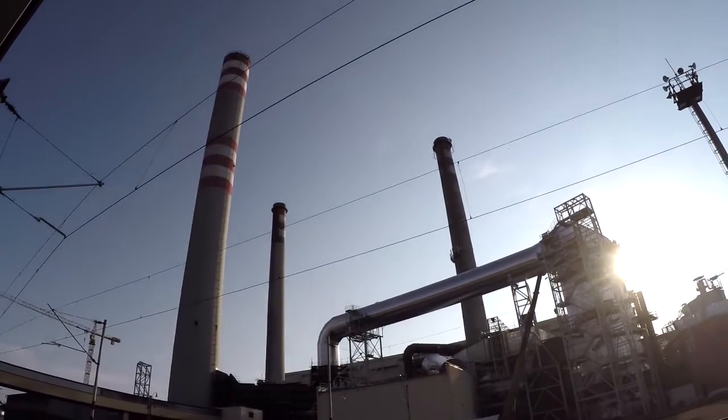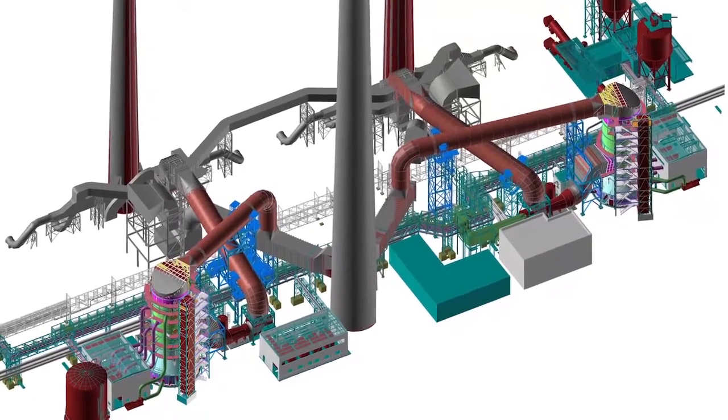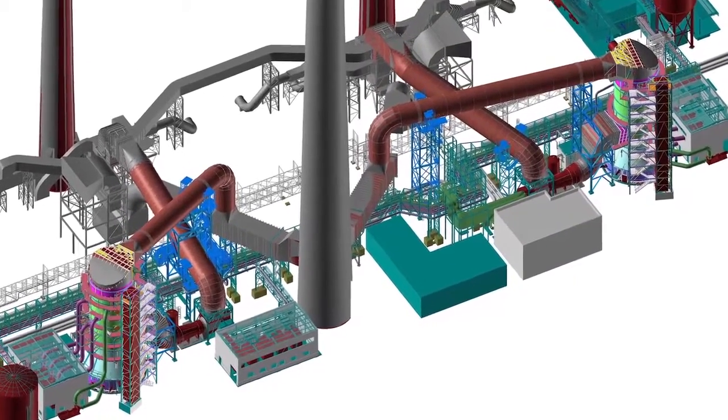The Apatavice power plant in the Czech Republic is installing wet flue gas desulfurization systems to remove sulfur from their flue gases. As part of this process, they are converting an existing brick stack over to wet operation.